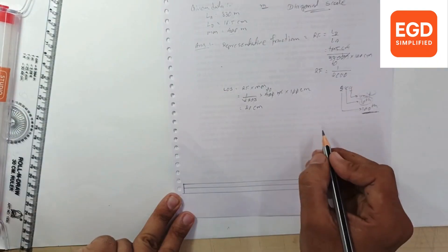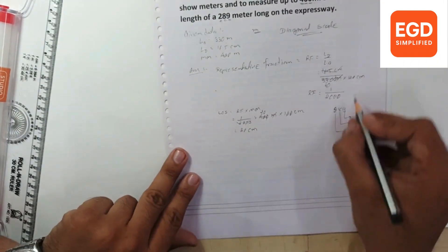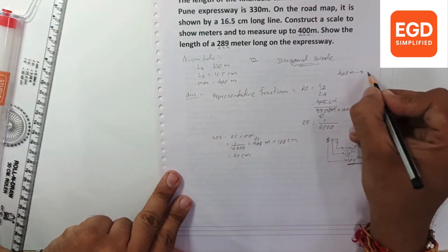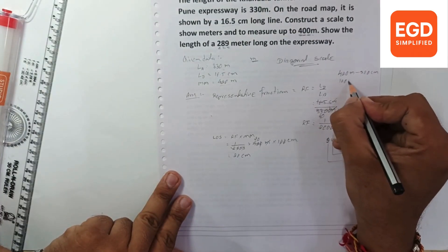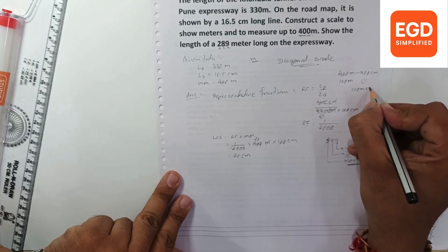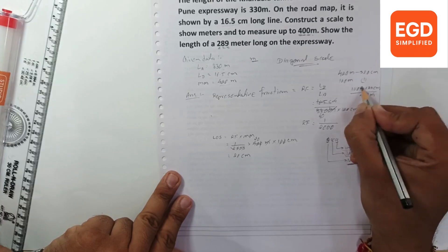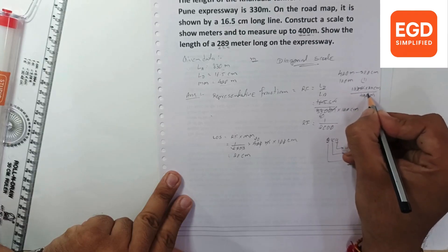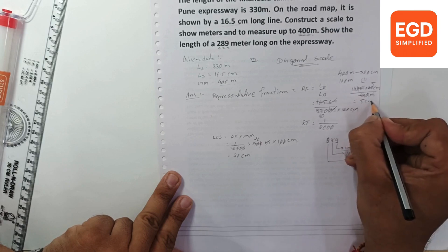So we have to divide in 100th. We have maximum measurement of 400 meters. So to indicate 400 meters long line, we have plotted 20 centimeter line. So to plot 100 meters, how much long line required? 100 meters into 20 centimeters divided by 400 meters. Answer will be 5 centimeters.